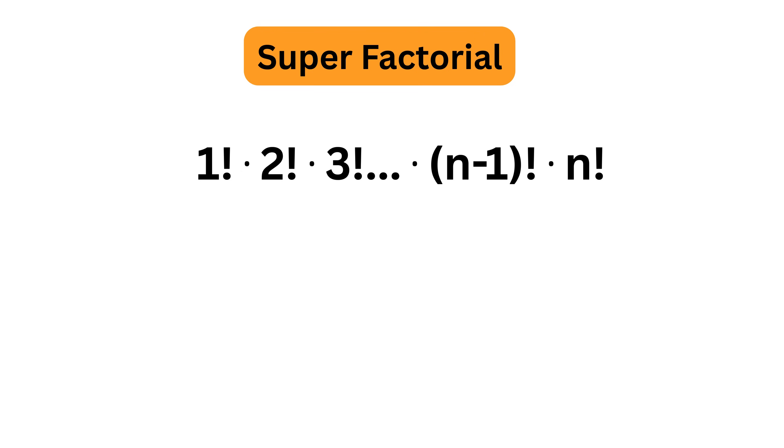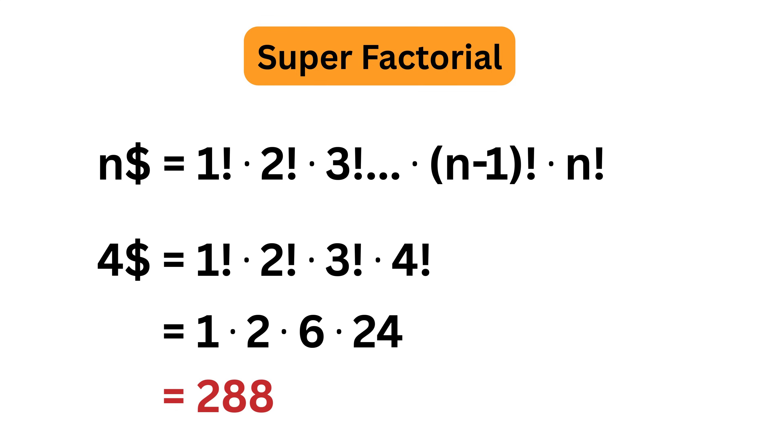We denote it with a number n followed by a dollar sign, so a superfactorial of 4 would be 1 factorial times 2 factorial times 3 factorial times 4 factorial. That is 1 times 2 times 6 times 24, which gives 288.